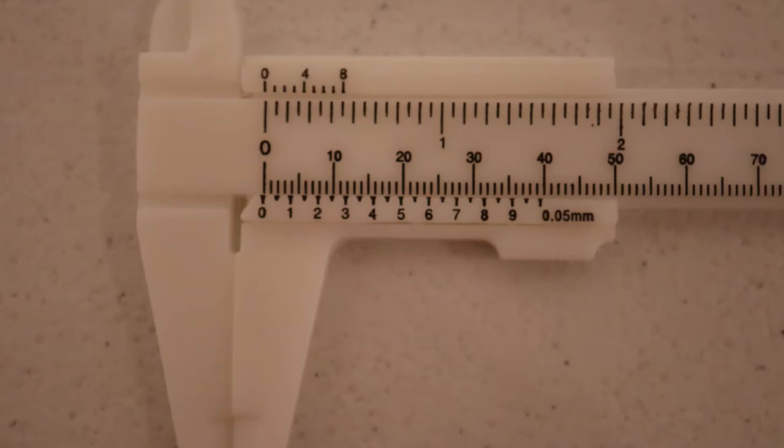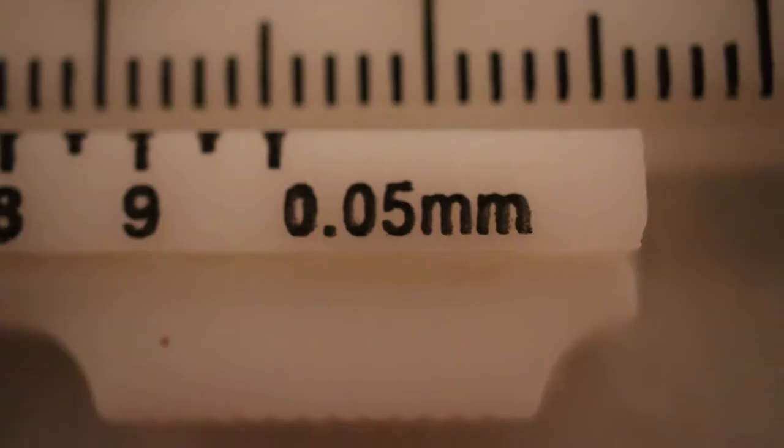Many analog measuring devices, including this vernier caliper, show the value on the tool. In this case, it is the number printed just below the vernier scale. However, we will still double-check this value by doing our own calculations.